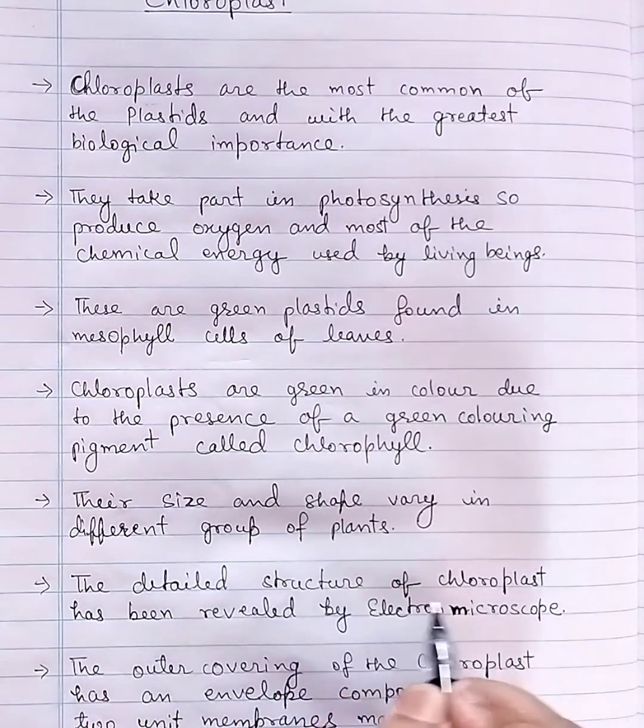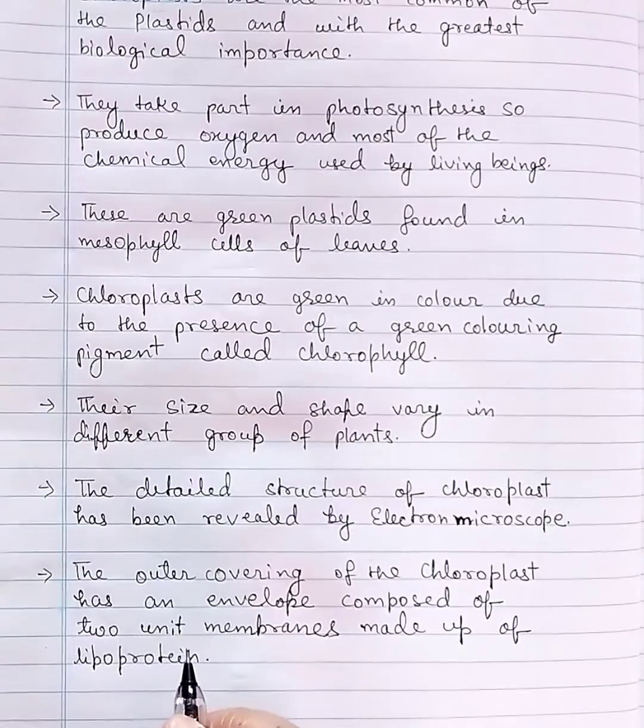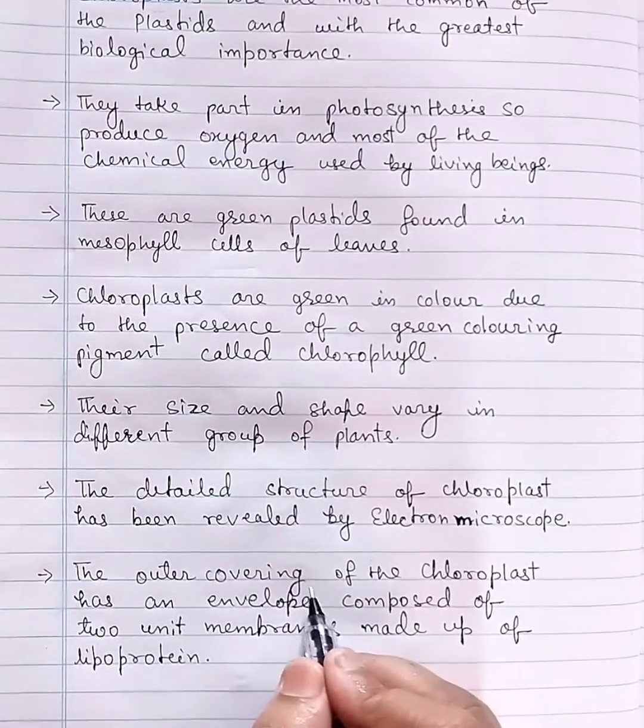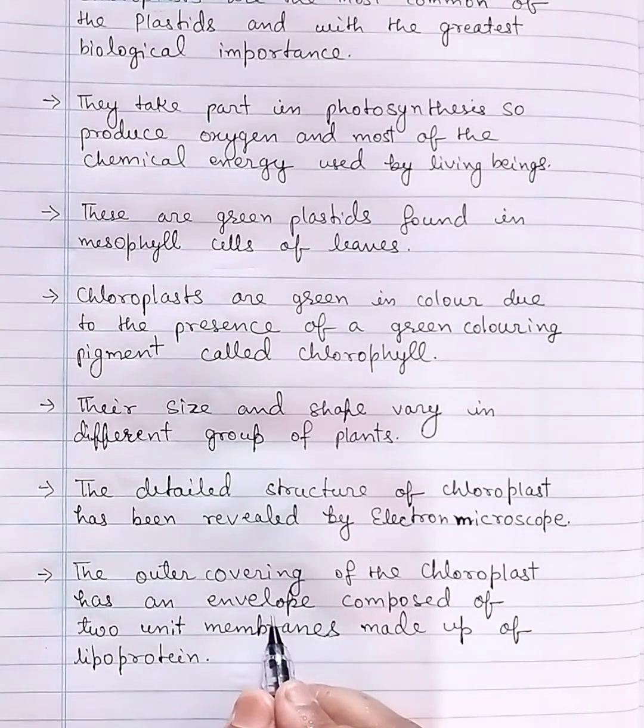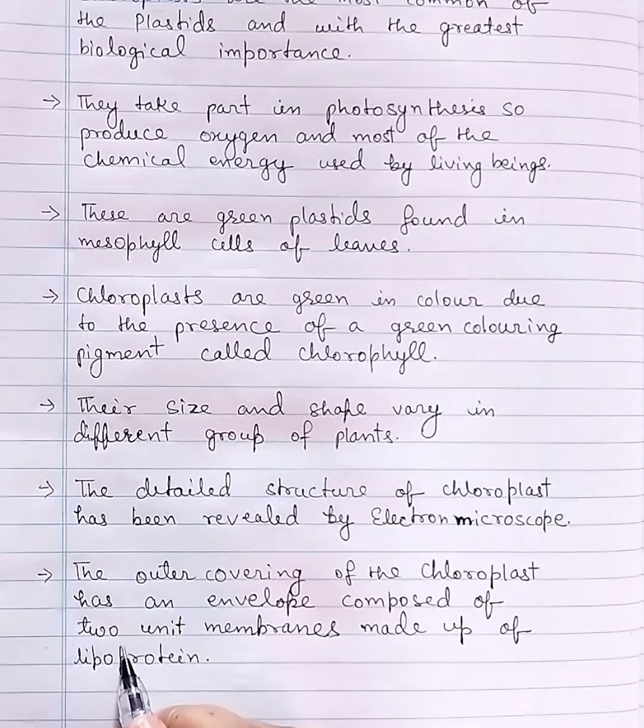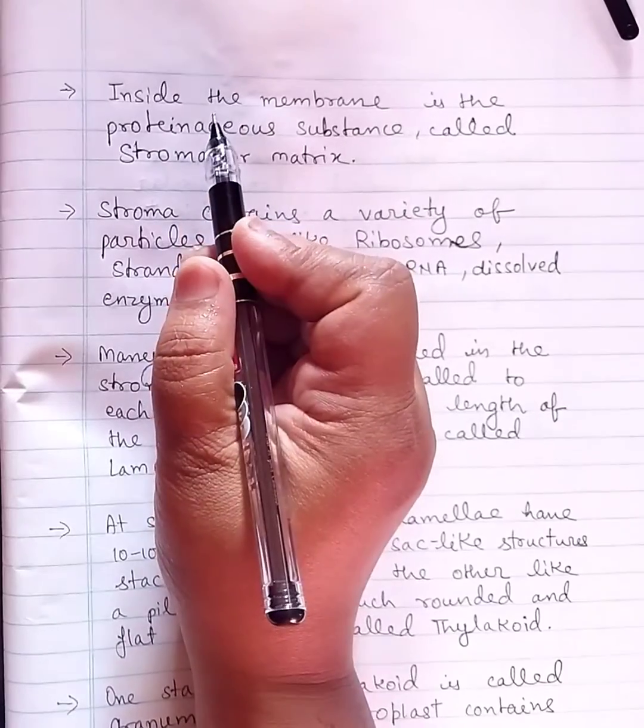The detailed structure of chloroplast has been revealed by electron microscope. The outer covering of the chloroplast has an envelope composed of two unit membranes made up of lipoprotein.